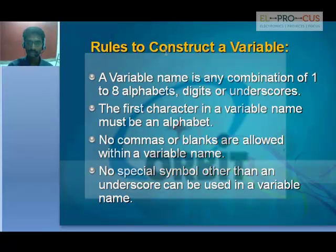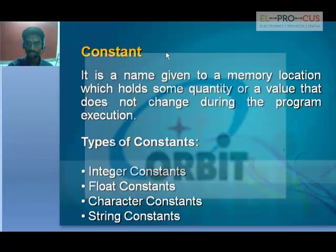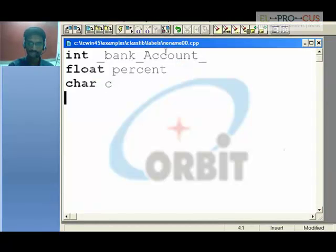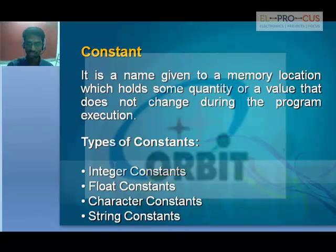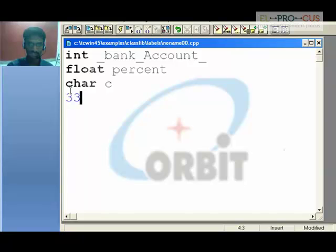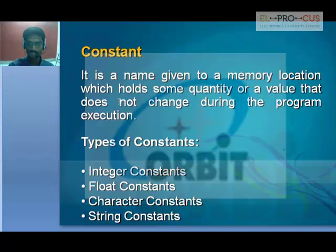A constant is a name given to a memory location which holds a certain value that does not change during program execution. Types of constants are: integer constants, float constants, character constants, and string constants.